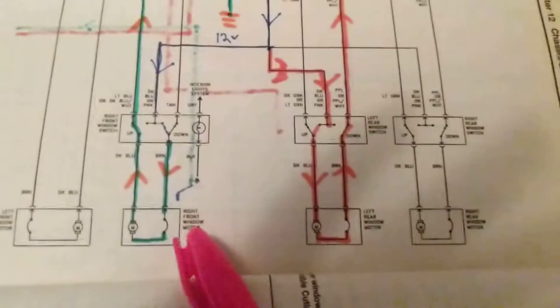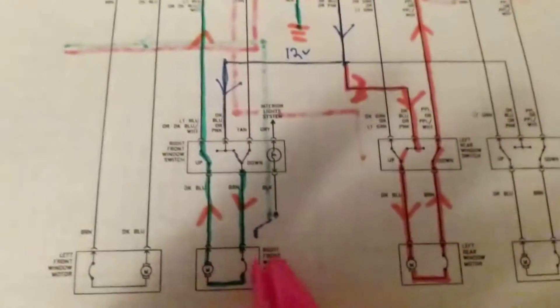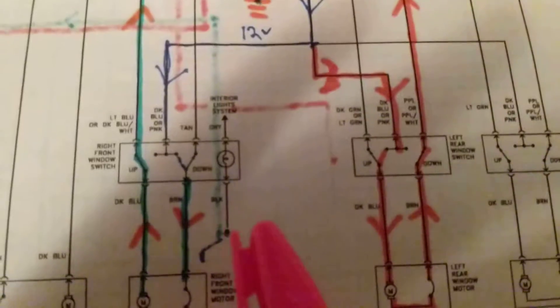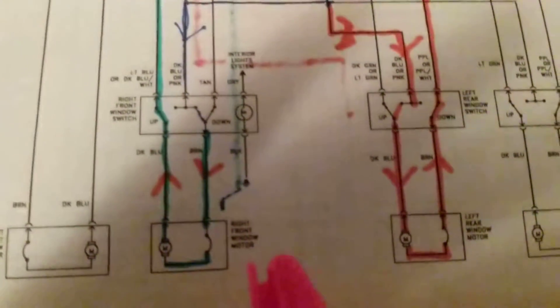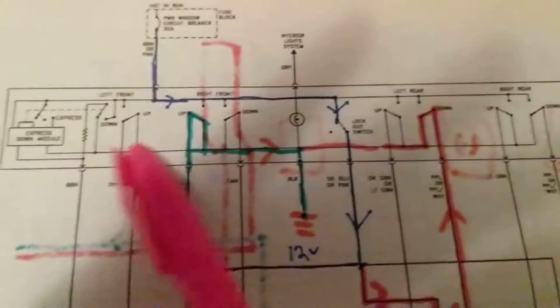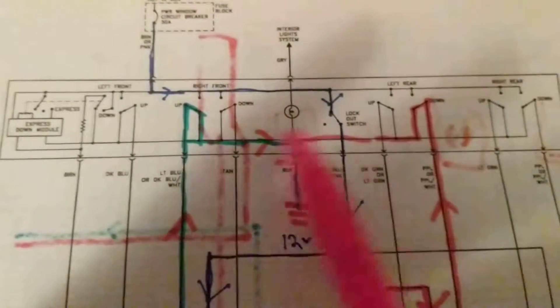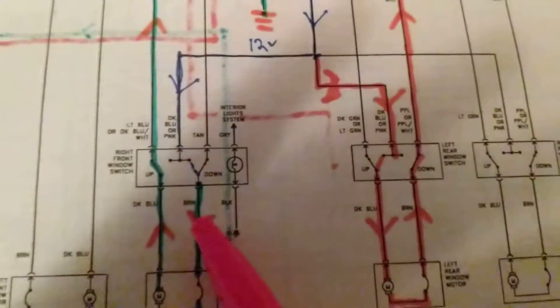The passenger can control his window up and down, over here. The rear, right rear and left rear are the passengers in the back. They can control their windows up or down. So basically, in summary, he is the master, the driver is the master. He controls everything. But let's say you're the passenger. How does it work? How do power windows work?